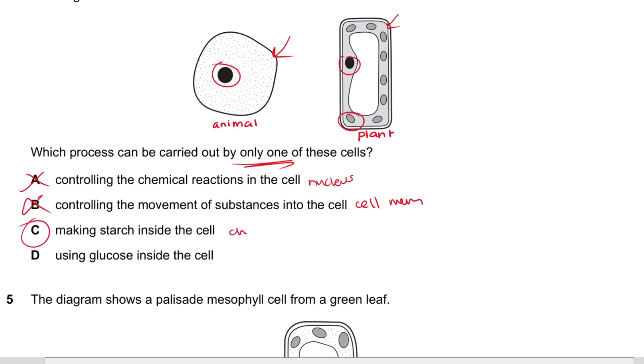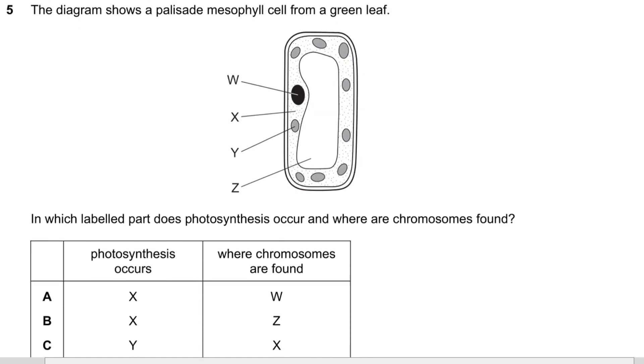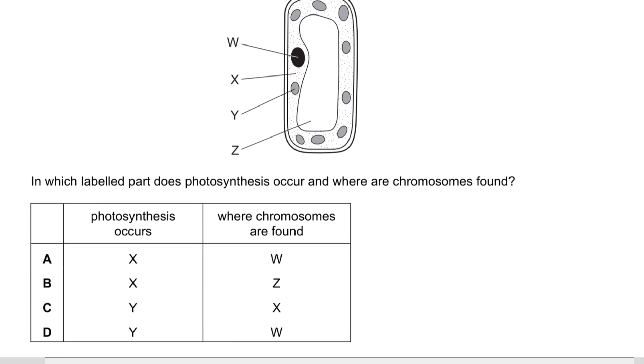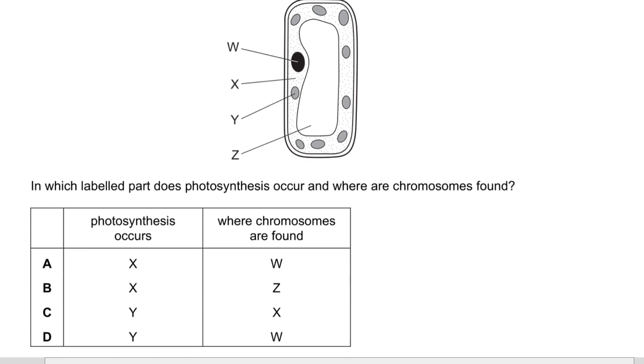Making starch requires the chloroplast, which is only in the plant cell — so the answer is C.